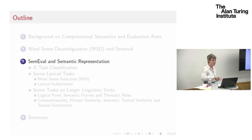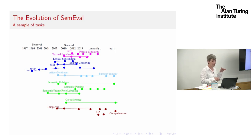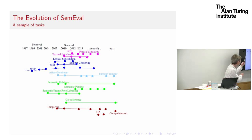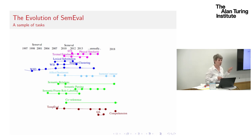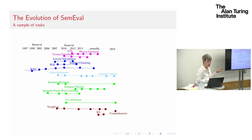Now I'm going into the SemEval tasks and talking about semantic representation. There's a whole range of different SemEval tasks. I've already talked about word sense disambiguation tasks, which were the main meat of SemEval. Towards the end of SemEval there started to appear other types of tasks, such as getting systems to mark up logical form and semantic roles, and then a number of different threads.